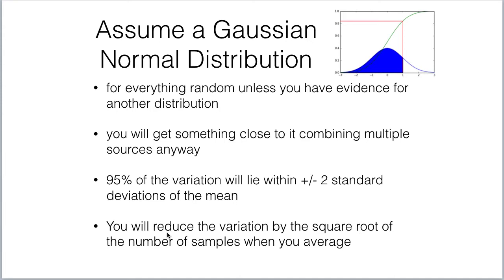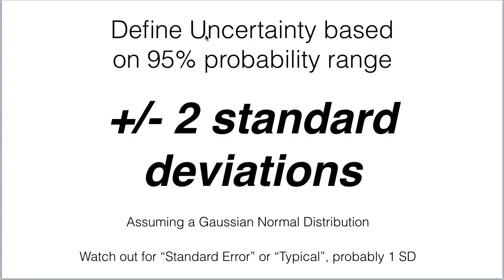If you take many samples and average them, you're going to reduce the variation in the mean by the square root of the number of samples. So if I take 100 samples, my mean will have 10 times less noise than my single samples. Always base yourself on 95% probability — plus or minus two standard deviations — and assume a Gaussian normal distribution. Watch out for people who talk about standard error or typical accuracies; they're probably just looking at one standard deviation, so you'll probably have to double those numbers.